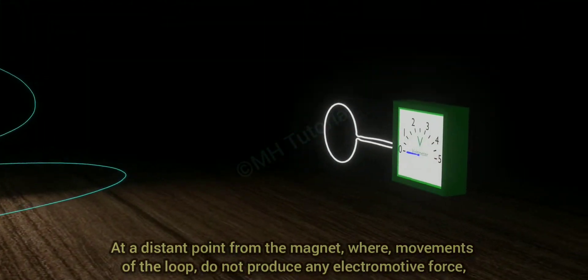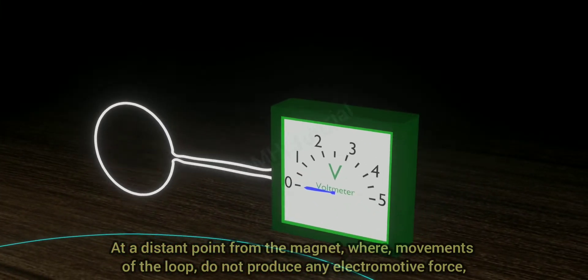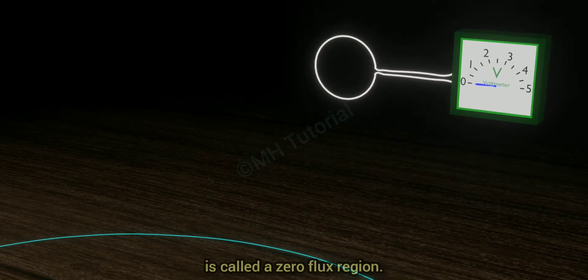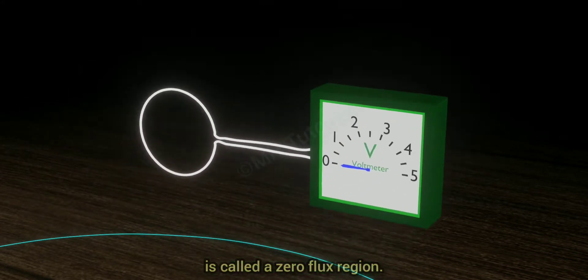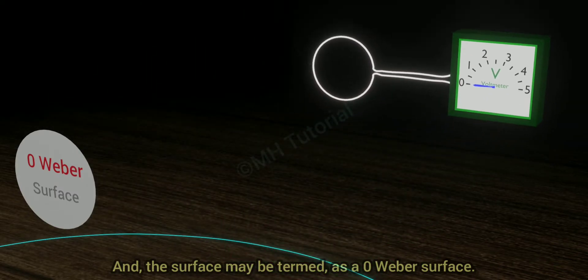At a distant point from the magnet where movements of the loop do not produce any electromotive force is called a zero flux region, and the surface may be termed as a zero Weber surface.